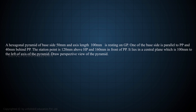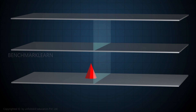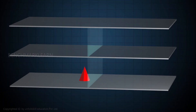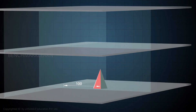Here you can see the hexagonal pyramid of base side 50 mm and axis length 100 mm resting on the ground plane, with one of the sides parallel to the picture plane and 40 mm behind it. The station point is located on the central plane which is 100 mm to the left of the axis of the pyramid, 160 mm in front of the picture plane, and 120 mm above the horizon plane.